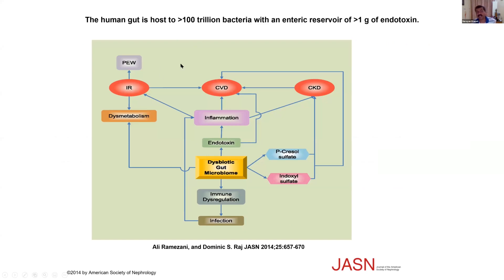The human gut is host to 100 trillion bacteria and contains more than one gram of endotoxins. In the dysbiotic gut microbiota seen in CKD patients, there is increased endotoxins and increased inflammation. Inflammation leads to progression of chronic kidney disease and cardiovascular disease, immune dysregulation, and infection. Two important uremic toxins — indoxyl sulfate and p-cresyl sulfate — are very well known, and their levels go up and up in the dysbiotic gut microbiota.